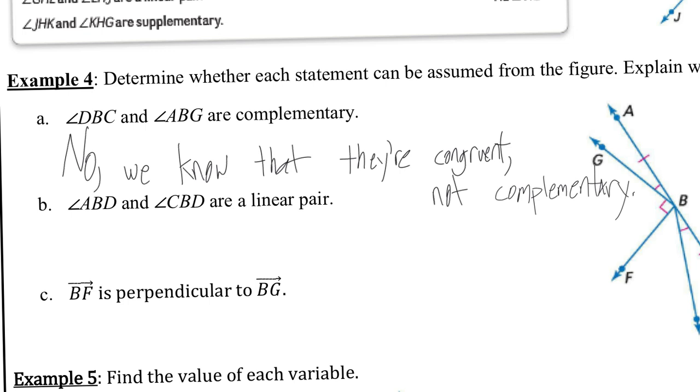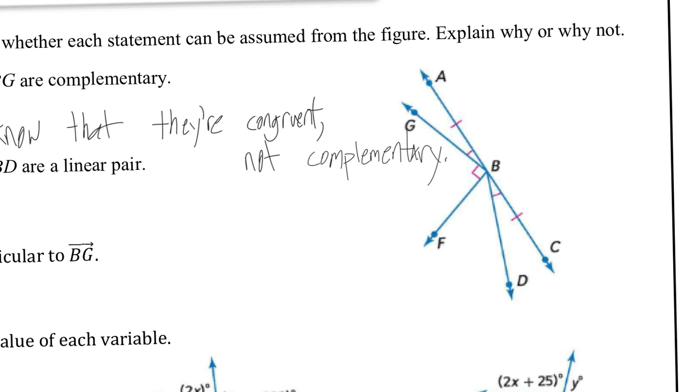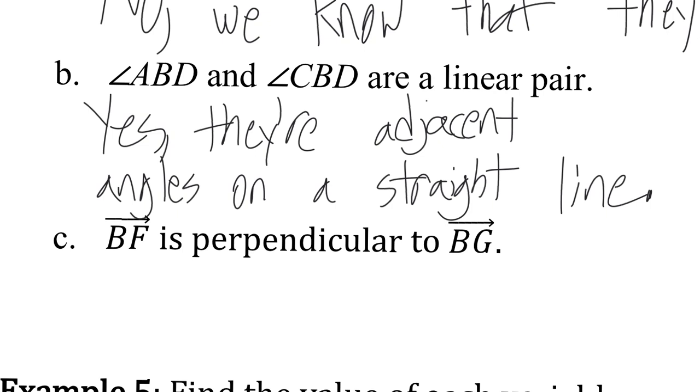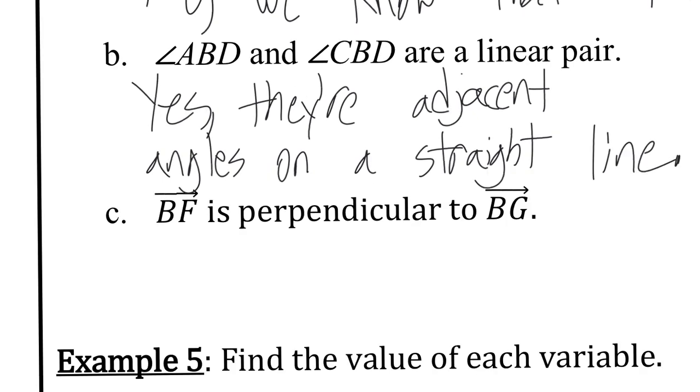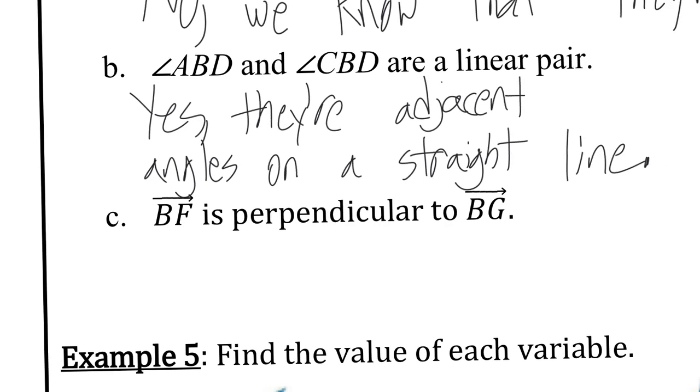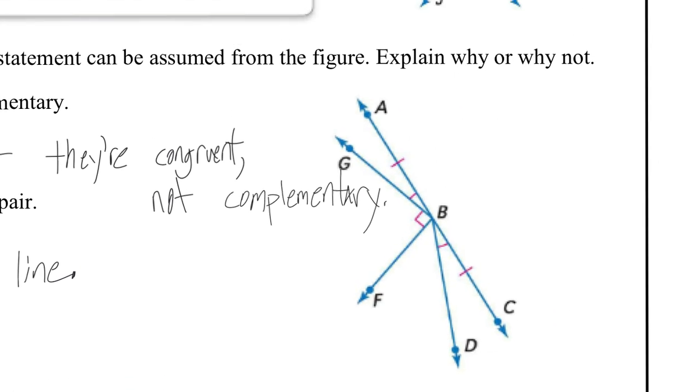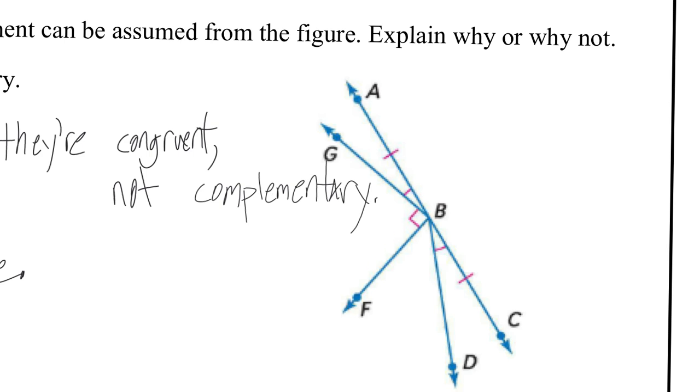Letter B, it says angle ABD and CBD are a linear pair. So let's trace what ABD and CBD are. ABD is this one and CBD, yes, because they are adjacent angles. Linear pairs need to be adjacent angles that share a straight line. Part C says BF is perpendicular to ray BG. So yes, you can assume that because there's a marked 90 degree angle and that's how perpendicular lines intersect.